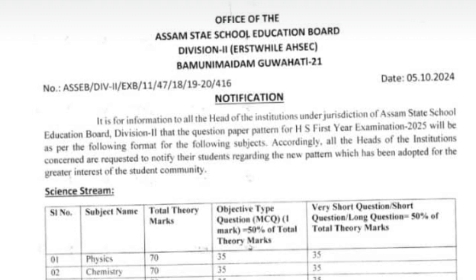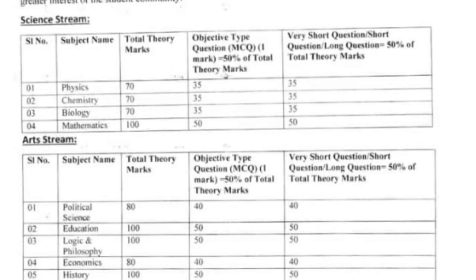Here is the pattern for Physics. In Physics, the theory paper is 70 marks and practical is 30 marks. The theory paper is 70 marks, of which 50% is MCQ — that means 35 marks are MCQ, which is the objective type. One mark each, totaling 50% of the theory marks. The remaining 35% covers very short questions, short questions, and long questions.